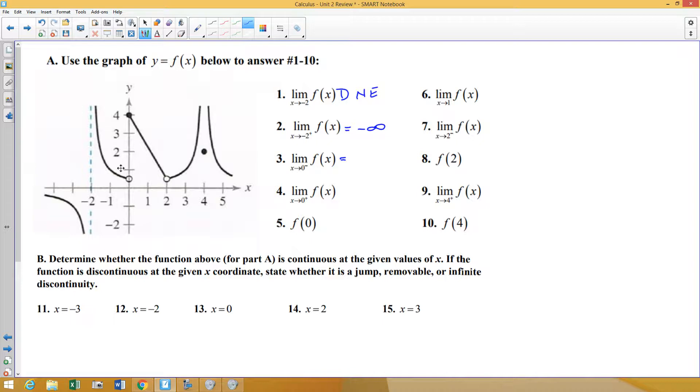Zero from the left, number three. Here is x equals 0, and the left side is going in towards that hole, which appears to be at a y-coordinate of 1 half. Zero from the right, the right side of 0 is going up towards that filled-in circle at y equals 4. So we'll answer with 4.